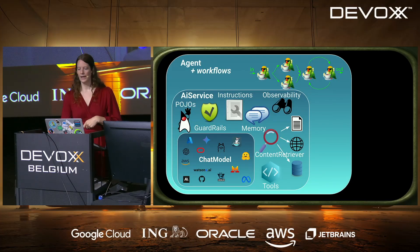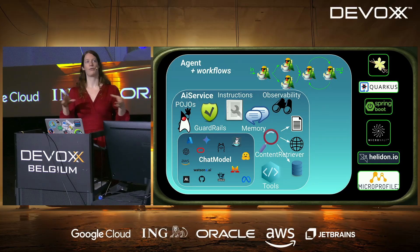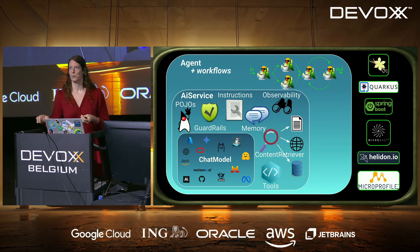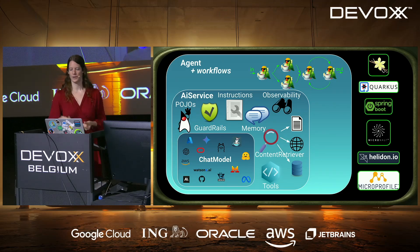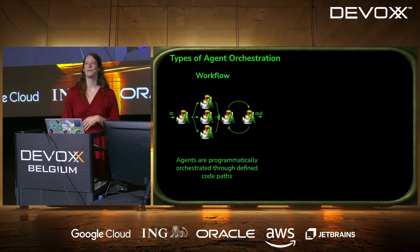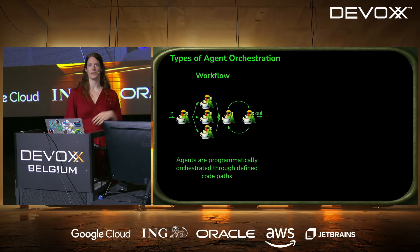One important clarification: LangChain4j works framework-agnostic. We have very strong Quarkus integration, but also a very strong Spring Boot integration, and we work with other frameworks and standards too.